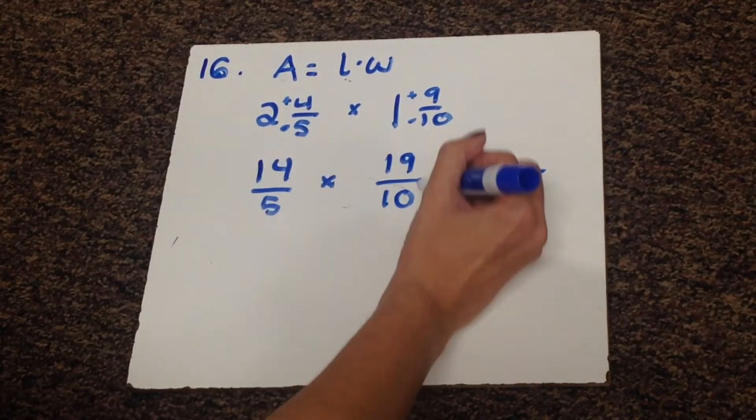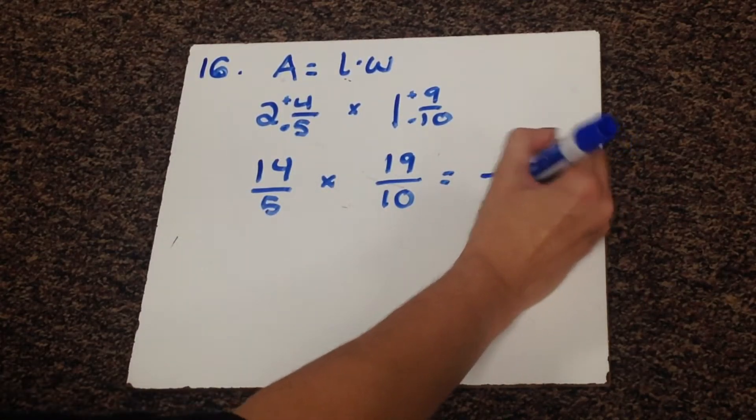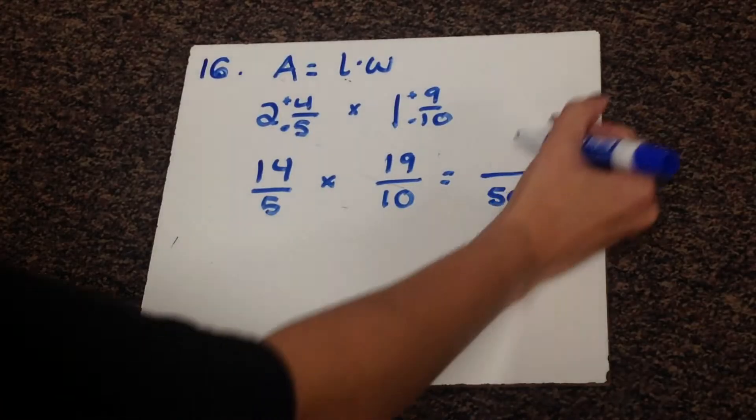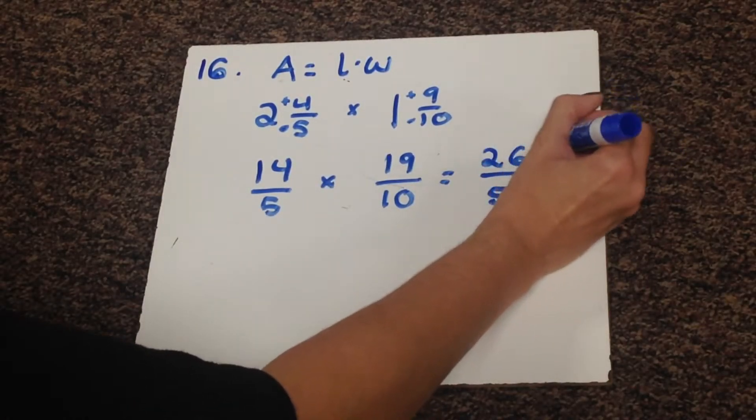On the bottom, that one's easy. 5 times 10 is 50. 14 times 19, a little trickier. If you have options, do it on the calculator or by hand. You'll get 266.